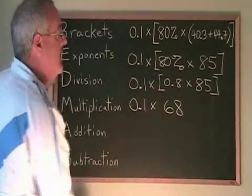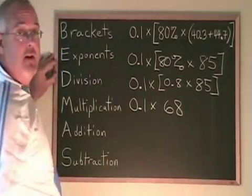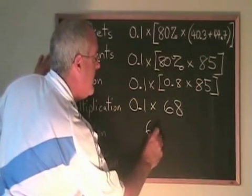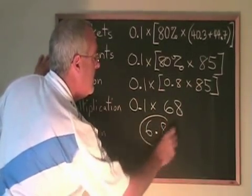I don't need the bracket anymore and I only have one operation left. 0.1 times 68 is equal to 6.8. I am finished.